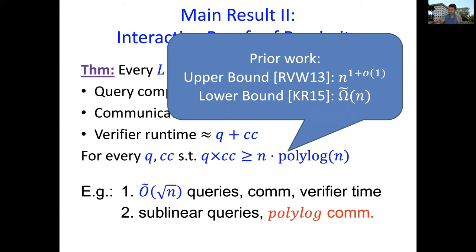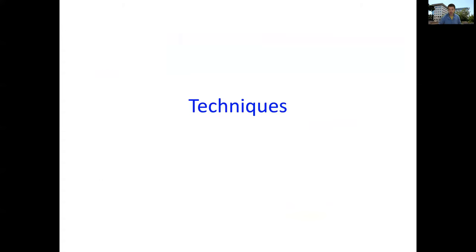That turns out to be crucial in order to get our batch verification result. Second thing I want to point out is that this result is very close to optimal. In work together with Kalai, we show that you need the query times communication complexity to be at least n over polylog n. That's under reasonable cryptographic assumptions.